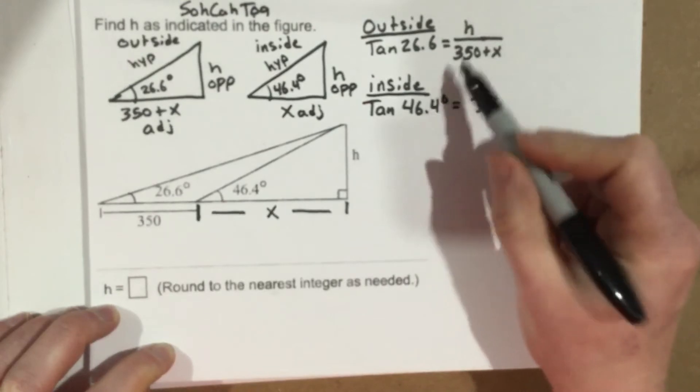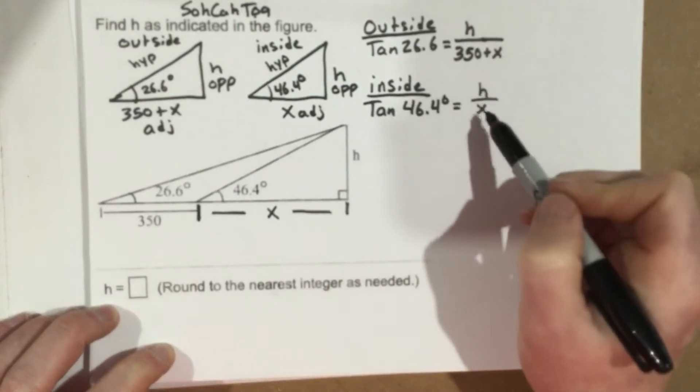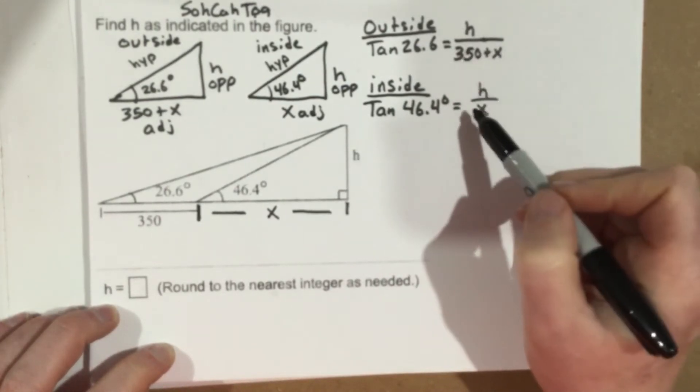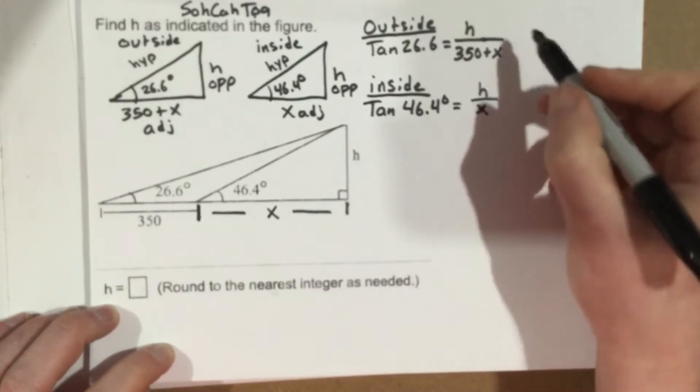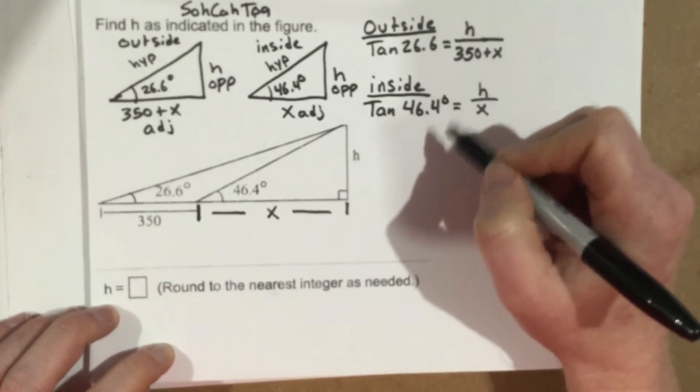So you can see I've got two equations that both have h in them. They both have x in them. Because they have the same variables, and I have two unknowns and I have two equations, I can use systems of equations to solve this. I'm going to use substitution. So let's rewrite this equation here so that we can use it better.